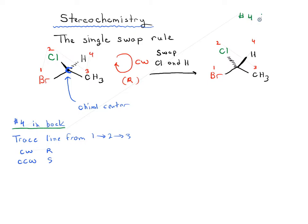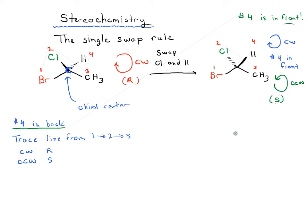But remember that number 4 has to be in the back, and here number 4 is in the front. As discussed in the previous video, when the fourth-ranked substituent is in the front, we just do the reverse — so instead of clockwise, it's counterclockwise, which means this is actually S. So we flipped which group was a dash and which was a wedge, and it went from R to S.